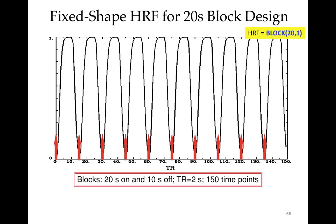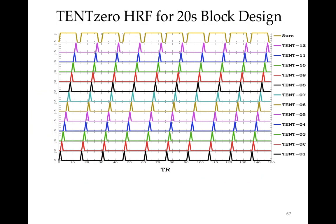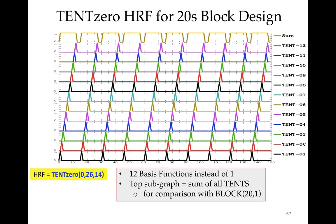From the previous talk, recall the fixed-shape HRF for a 20-second block design. The same stimulus times modeled with tent functions using tent0(0, 26, 14) — 26 seconds to cover the 20-second stimulus plus 6 seconds to die off — yields 14 knots. The bottom 12 subgraphs show the individual tent functions, and the top graph shows their sum. You can compare the piecewise linear shape to the more curved block-function shape, with all betas set to one here.